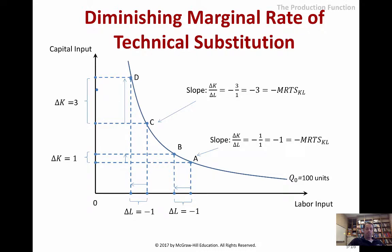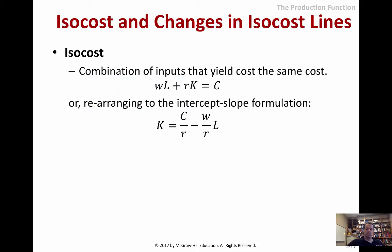At different points on the isoquant curve, there are different levels of tradeoff. In the middle, you could go either direction. But as you start to move to one extreme — where you have a lot of one input and not as much of the other — the tradeoff becomes more steep. We also want to find what combination of inputs yields not the same output but the same cost.